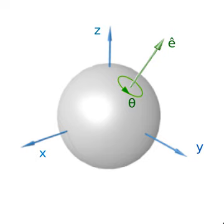A three-dimensional rotation can be specified in a number of ways. The most usual methods are Euler angles. Any rotation about the origin can be represented as the composition of three rotations defined as the motion obtained by changing one of the Euler angles while leaving the other two constant. They constitute a mixed axes of rotation system, where the first angle moves the line of nodes around the external axis Z, the second rotates around the line of nodes, and the third is an intrinsic rotation around an axis fixed in the body that moves. This presentation is convenient only for rotations about a fixed point.